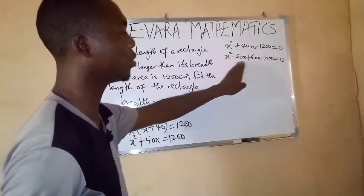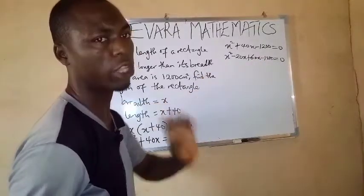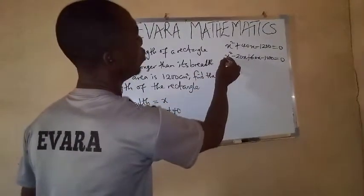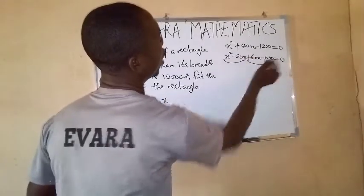So now the expression on the left-hand side now has four terms. We will group them in two and then factorize.